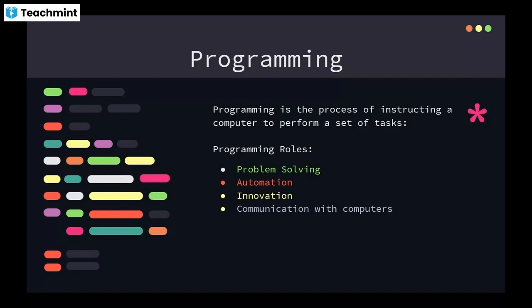In innovation, the latest trends include machine learning, drone farming in agriculture, self-driving cars, and robotics performing operations in the medical field. All these latest innovations are running on programs. And next, communication with computers — programming serves as a means of communication between humans and computers.